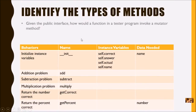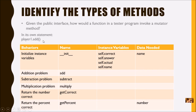Given this public interface, how would a function invoke a mutator method? Remember, a mutator does some work and doesn't have a return statement. So when a function calls it, it's going to be its own statement — something like this.